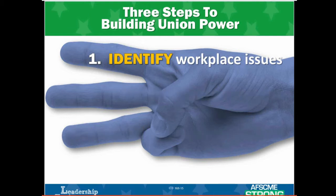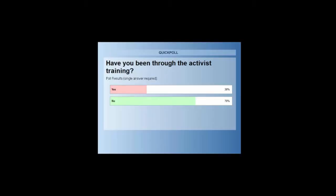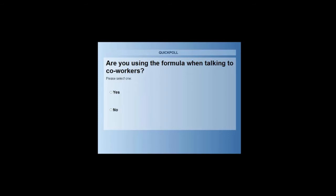The first step is to identify potential issues to organize around. The Ask Me Strong five-step organizing conversation is a great way to do this. Could you give me a little feedback? We're going to put up a polling tool — let me know how many of you have been through the Ask Me Strong activist training already. If you have, select yes. If you haven't, select no. For those of you who have been through the training, how many of you are using the formula when talking to your coworkers? If you're using the formula, select yes; if not, select no.